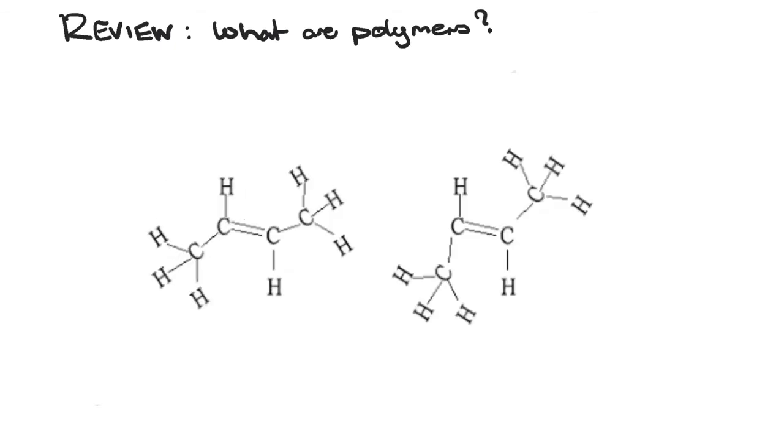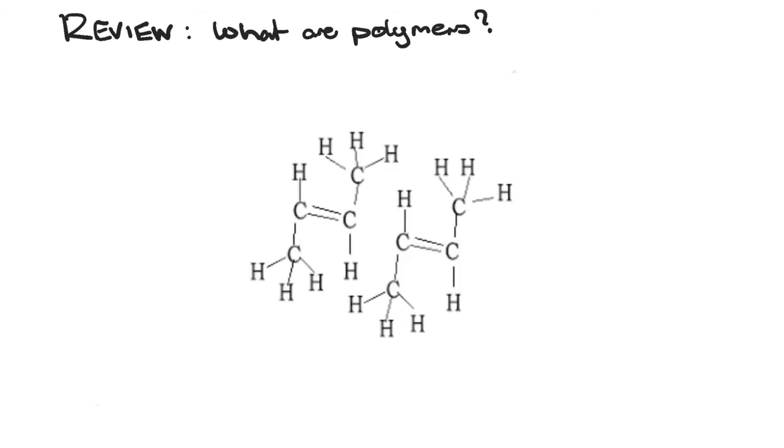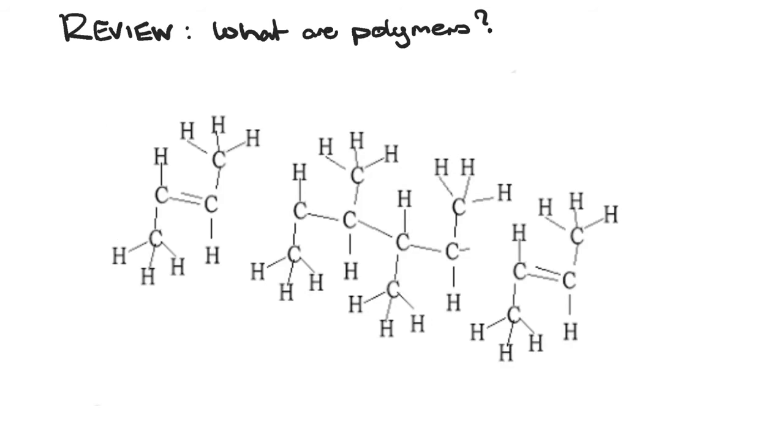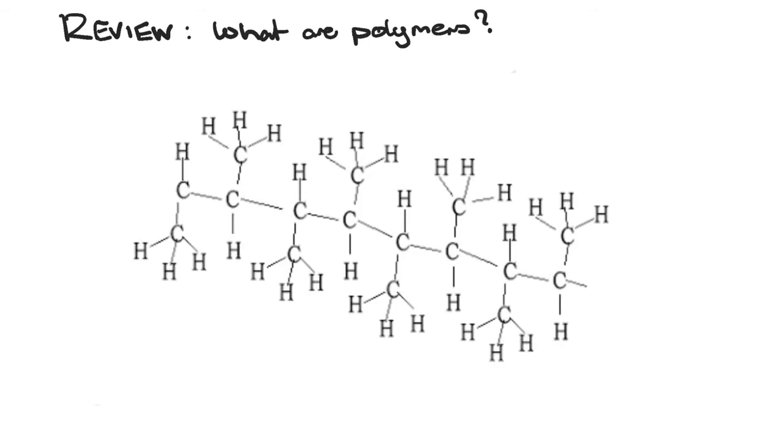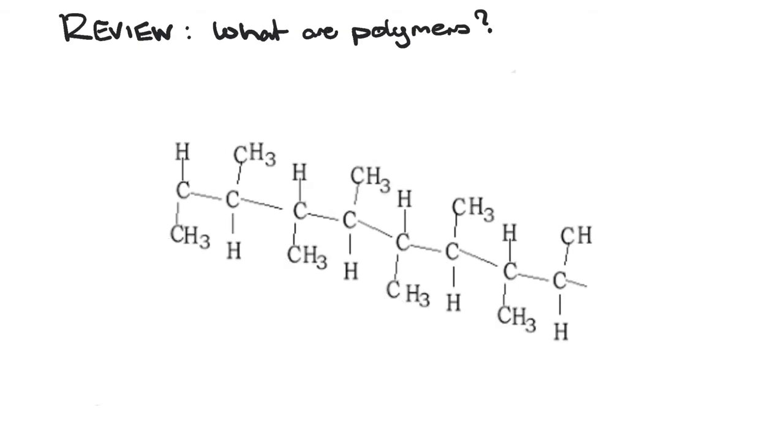Polymers are formed by a chemical reaction in which a large number of monomers are joined sequentially to form a chain. With many polymers only one type of monomer is used, however in others there may be two or three.